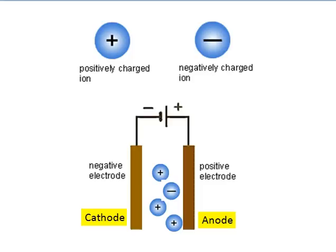So cations, positive, will travel to the cathode, negative. Anions, negative, will travel to the anode, which is positive.